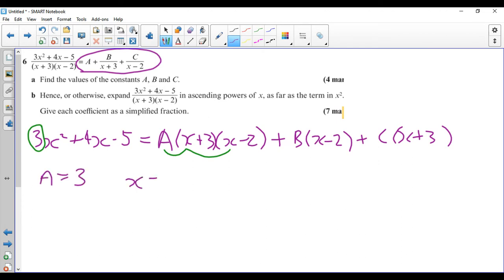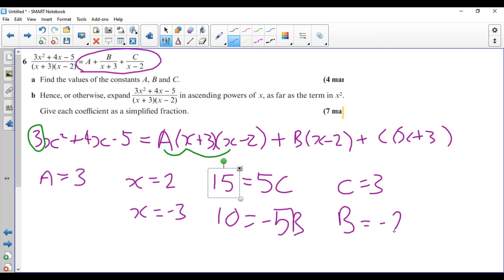Now let's take x equals 2 because that will get rid of the x minus 2 bracket. And I get 15 on the left hand side and 5C on the right hand side. So C is equal to 3. And if I make x equal to minus 3, I will get 10 on the left hand side and minus 5B on the right hand side. So B is equal to minus 2.